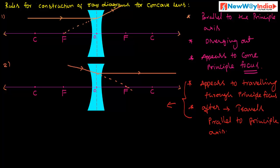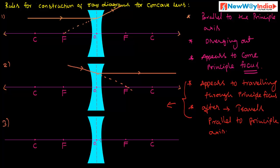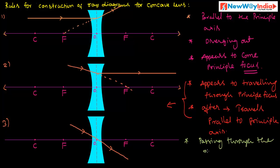What is the third rule? Consider another concave lens. Any ray of light passing through the optical center of a concave lens passes on undeviated. This is a ray of light passing through the optical center of the concave lens — it will pass on undeviated. What is the third rule? The incident ray passing through the optical center passes on undeviated.